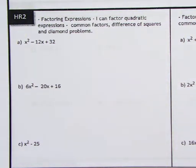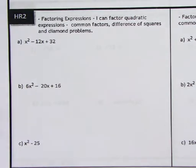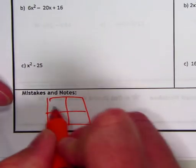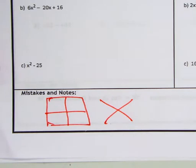HR2 Factoring Expressions. This whole target comes down to that old generic rectangle and diamond problem stuff that you were doing before. I really feel like you have to understand this whole setup, where you make a generic box and you have the diamond problem here.